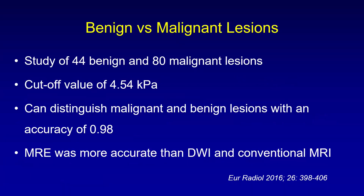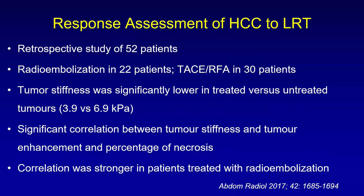For benign versus malignant lesions, a study of 44 lesions found that a cutoff value of 4.54 kilopascals can distinguish malignant and benign lesions with an accuracy of 98%, and MRE was more accurate than diffusion-weighted imaging and conventional MRI. A retrospective study of 52 patients assessed response to local-regional therapy: 22 patients had radioembolization and 30 had TACE or RFA. Tumor stiffness was significantly lower in treated versus untreated tumors, with significant correlation between tumor stiffness, tumor enhancement, and percentage of necrosis — correlation was strongest in radioembolization patients.